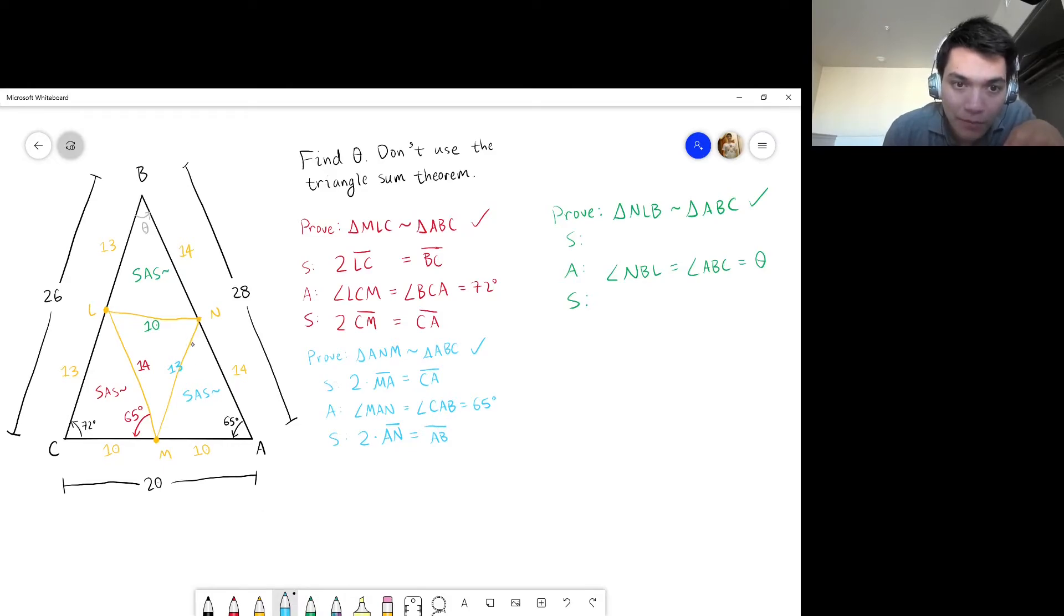I forgot one angle. So, in triangle ANM, this angle would be 72 degrees because it corresponds to angle BCA. NMA corresponds to angle BCA.